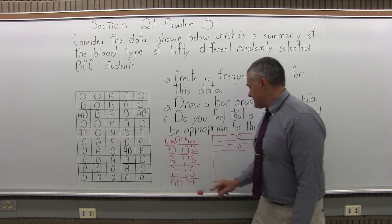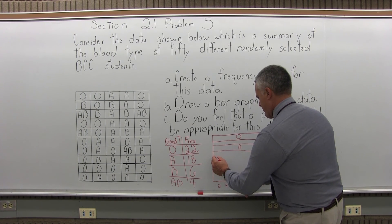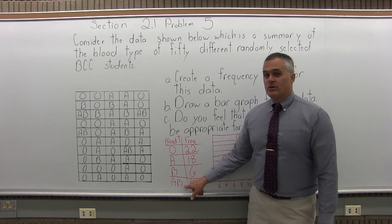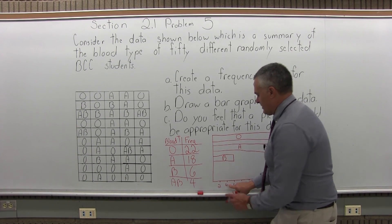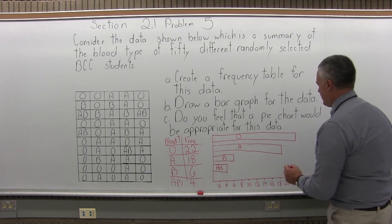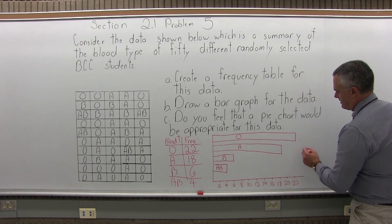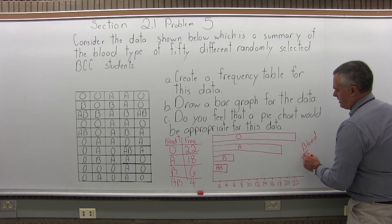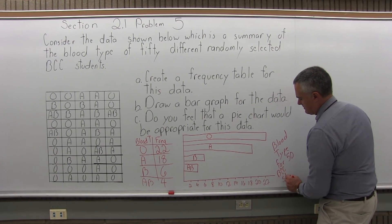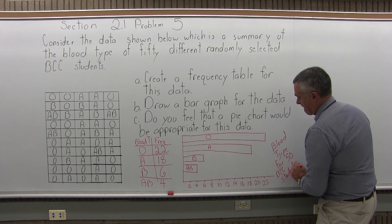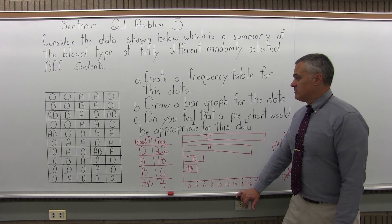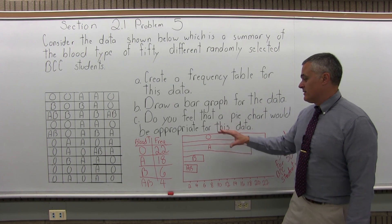The next one, blood type B, is going to go up to 6. I have 6 on my number scale. And finally, the last one, blood type AB, goes out to 4. I have 4 on my number scale. Again, the bars don't touch. It's nice if we give the bar graph a name, so we'll say right off to the side: Blood type of 50 BCC students. And notice, coincidentally, it is a Pareto. The bars go from big to small. So that was B. Draw a bar graph. We have a bar graph. And this one did go horizontally, which is okay.